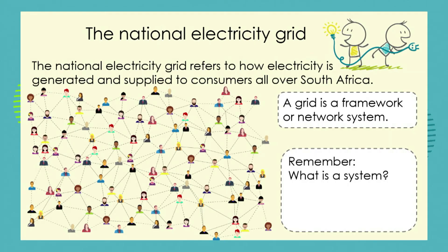In talking about the National Electricity Grid, I want to remind you that you have learned about this in previous grades, so some of this will be familiar to you. What do we mean when we talk about a National Electricity Grid? Let's break it up into each of the terms. A grid is what we call a framework or a network system. Have a look at this example — this is a social media network.